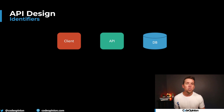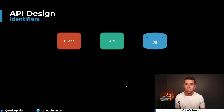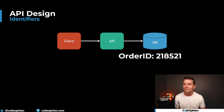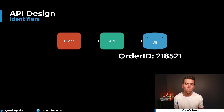The first tip is about where you're generating identifiers — IDs. It's typical if you're using a database with an auto-incrementing ID that your database is actually the one generating it. So we have a client make a request — let's say we're placing an order — we persist that data to our database and our database at that point is the one generating that ID, let's say that order ID, and then we use that and return it back or use it somewhere else.